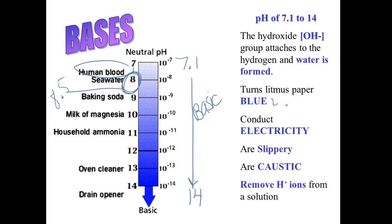Bases, you should know, turn litmus paper blue. They conduct electricity just like acids do. I said earlier that usually anything that's slippery is a base. Bases are caustic, which means they'll eat right through your skin.